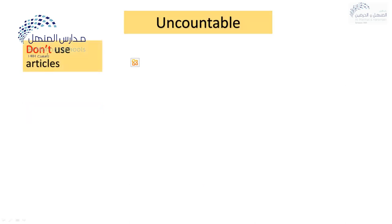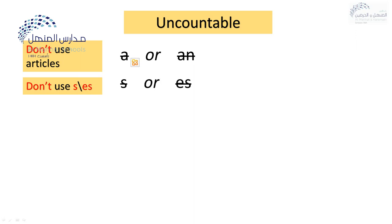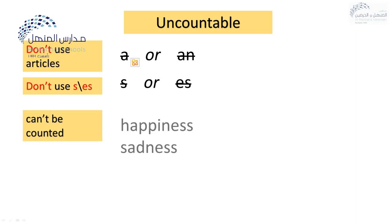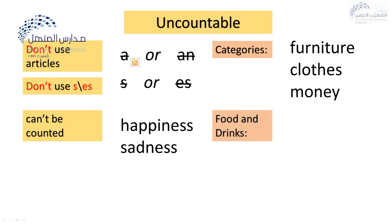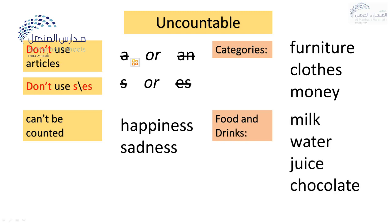What about uncountable nouns? Uncountable nouns — we cannot use articles like a or an. We cannot use the plural at the end: s, es or even ies. So uncountable nouns — we cannot count nouns like happiness or sadness. These are abstract nouns. Also categories like furniture, clothes, money, fortune, information and so on. And some kinds of food and drinks — we cannot count these nouns like milk, water, juice and chocolate.